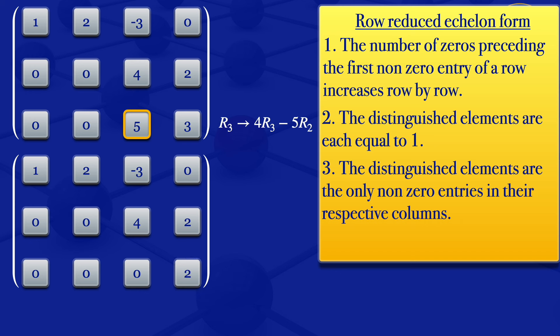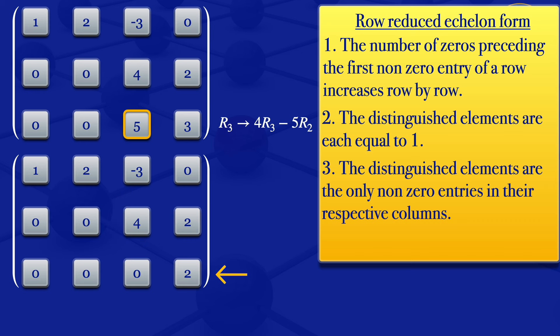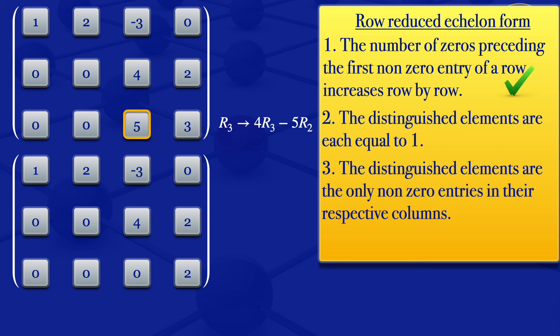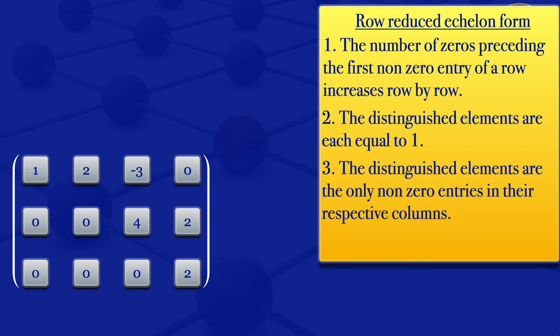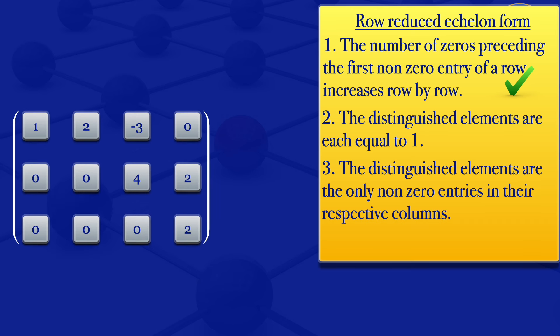So what we are now having is that the number of zeros preceding the first non-zero entry of a row is increasing row by row. Here we don't have any zero before the distinguished element; here we have two zeros; and here we have three zeros before the distinguished element. So we satisfy condition number one — condition one has been satisfied.